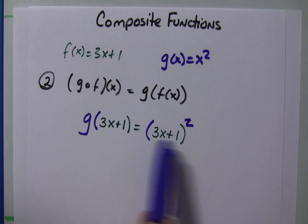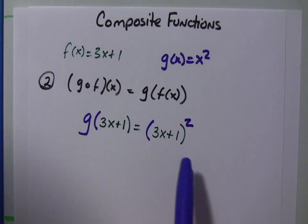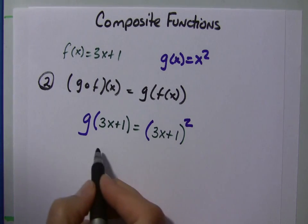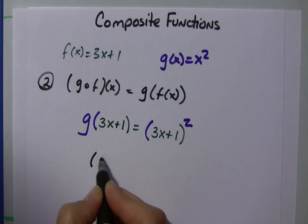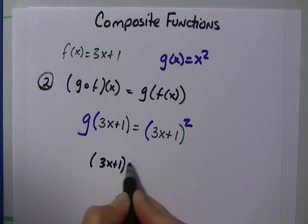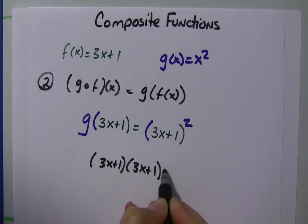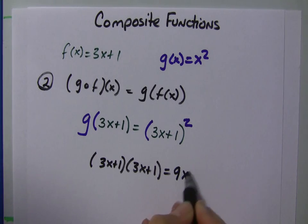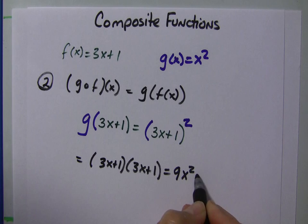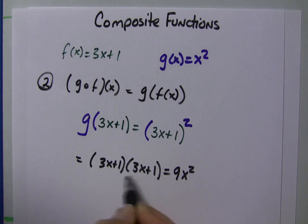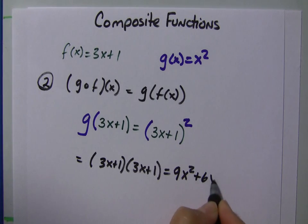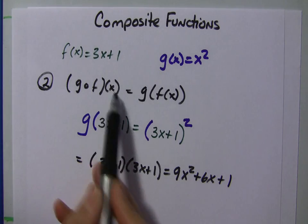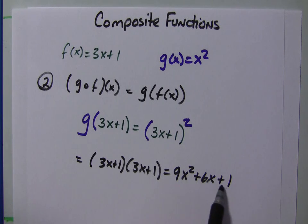This could be considered done depending on what level of math you're taking. If you needed to expand that, what you should do is go 3x plus 1 times 3x plus 1. You would foil that out, and you would end up with 9x squared. The outer is 3x and 3x, so we're going to get plus 6x. And then the last is 1. So, the g of f of x is 9x squared plus 6x plus 1.